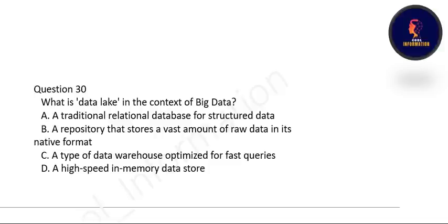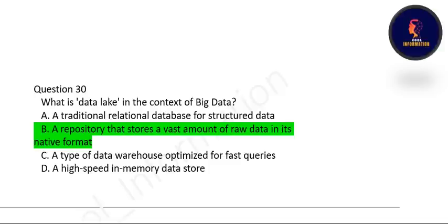Question 30: What is a data lake in the context of big data? A data lake is a repository that stores a vast amount of raw data in its native format. Option B is correct. Thank you so much for watching. Please make sure to watch the next video — you can see the link on your screen or go through the playlist.